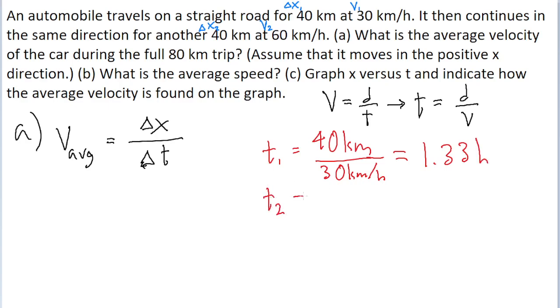Then we'll do the same thing for t sub 2. So that is again 40 kilometers, but this time divided by a speed of 60 kilometers per hour, since that is the speed for the second leg of the trip, which gives us 0.67 hours.